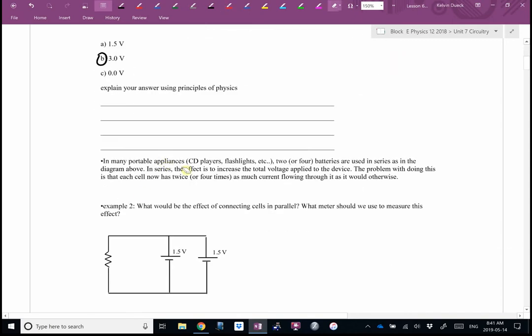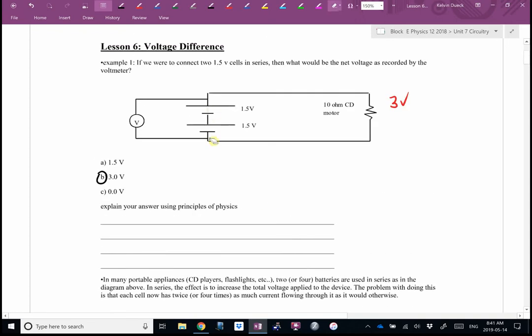So, in many portable appliances, CD players, flashlights are the classic one. Two or four batteries are used in series in the diagram above. In series, this increases the total voltage applied to the device. Now, the problem with doing this, though, is now each cell has twice as much or four times as much current running through it.